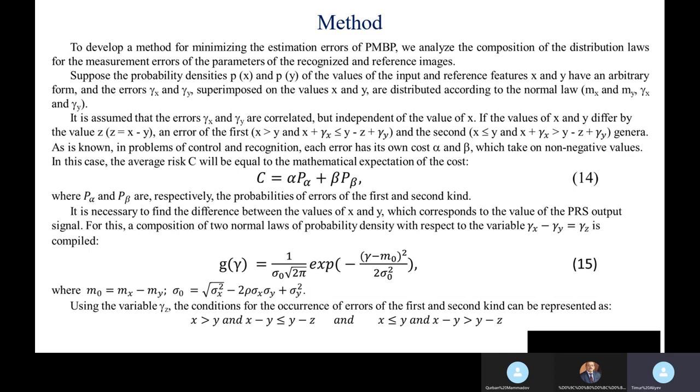If the value of X and Y differ by the value z, which equals x minus y, an error of the first kind occurs when x plus gamma_x is greater than or equal to y minus z plus gamma_y, and the second kind when x is less than or equal to y and x plus gamma_x is greater than y minus z plus gamma_y. As is known, in problems of control and recognition, each error has its own cost, alpha and beta, which take on non-negative values. In this case, the average risk C will be equal to the mathematical expectation of the cost, which is shown in expression 14.